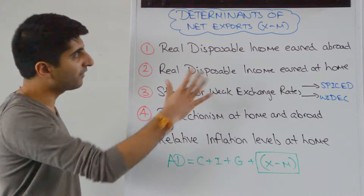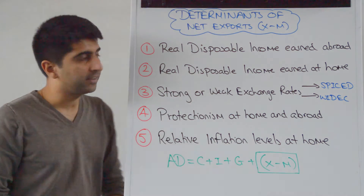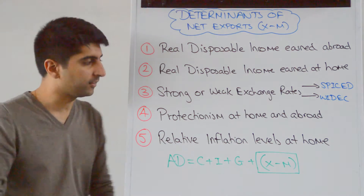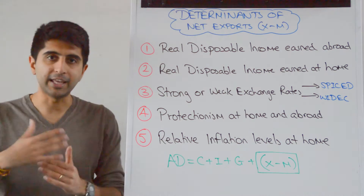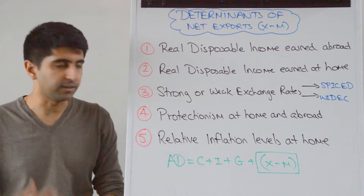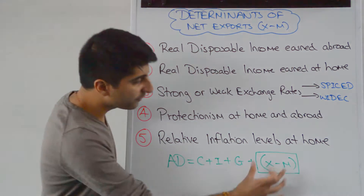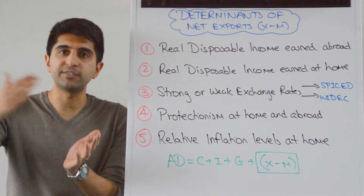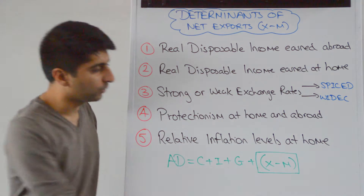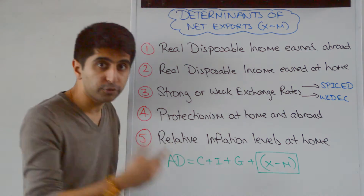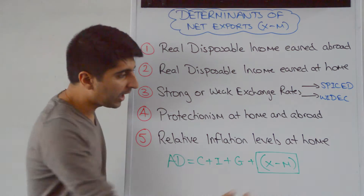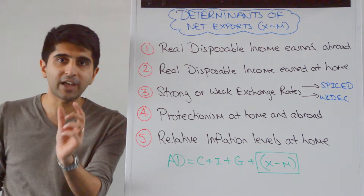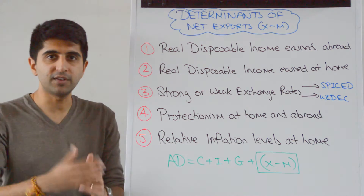Let's now look at factors that can determine whether net exports increase or decrease, and therefore whether aggregate demand increases or decreases. If the value of this bracket increases, aggregate demand will shift to the right. Exports could increase and/or imports could decrease — that would increase the value of the bracket and shift AD right.